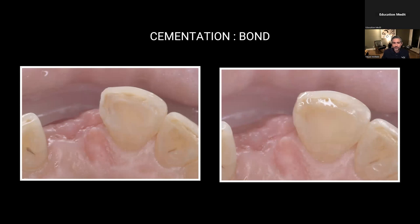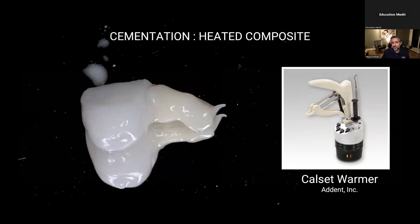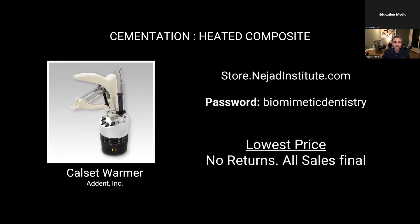This is all going to be replaced in the next phase of treatment, so there's really no major concern. To cement this Maryland bridge, I'm going to use what I use for a lot of my restorations: heated composite. It gives me unlimited working time, it's easy to work with, and it gives good results. It's less stressful than trying to use a dual-cure cement. To heat it up, I'm using the CalCet Warmer from Aiden. I've been using this since dental school back in 2008 and I love it. If you're interested in purchasing it, you can contact Aiden — they have it on their website, or you can buy it through my store at the cheapest price, since they've given permission for that.